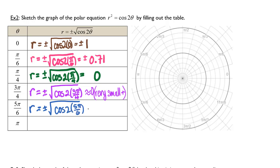And the last one we have is r is equal to plus or minus the square root of cosine of 2 times pi. This gives me plus or minus 1. Now this is approximate as well, but it's so close to 1 that for our graphing purposes we're just going to call it that.